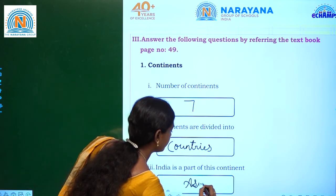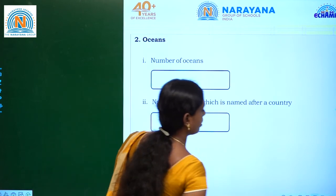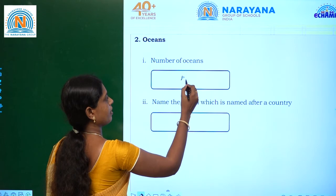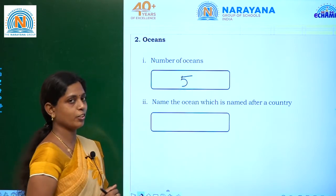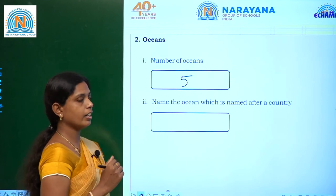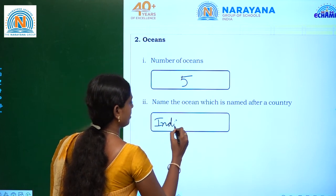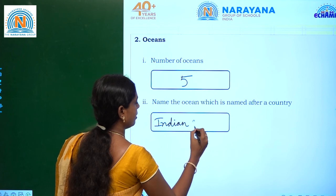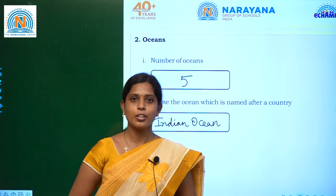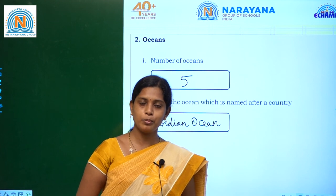India is a part of which continent? Asia. Next, number of oceans — how many oceans are there? Five. Name the ocean which is named after a country — Indian Ocean. We have completed our amazing assignment. Practice at home. Thank you.